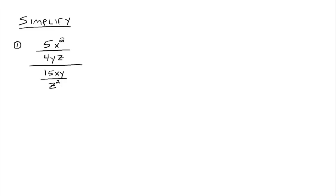An example would be this one, where you have a big fraction with the bigger bar in the middle as the fraction bar. In the numerator of this bigger fraction, you have 5x squared over 4yz, and in the denominator you have 15xy over z squared. I call these baby fractions inside the bigger fraction.